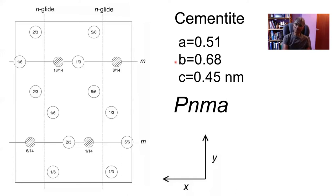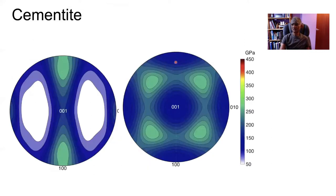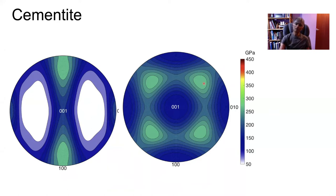This orthorhombic lattice also means there is a strong anisotropy in mechanical properties. Looking at a single crystal of cementite, the modulus is highly anisotropic and the C44 shear constant is close to zero — but not zero, otherwise the structure would be mechanically unstable. If you compare the corresponding plot for ferrite in steel, there is a variation in the modulus as a function of orientation, but that variation is much smaller than in the case of cementite with its orthorhombic lattice.